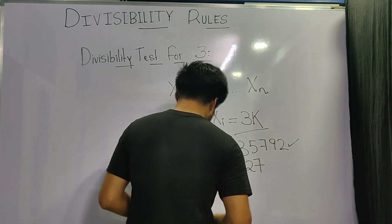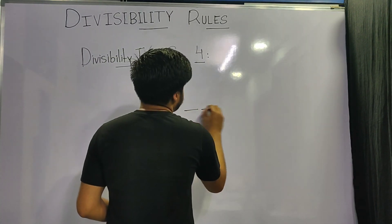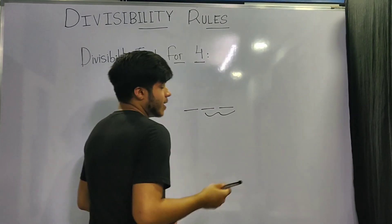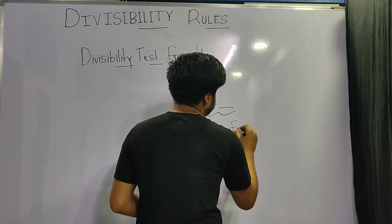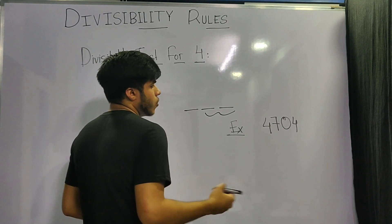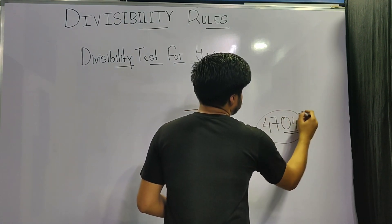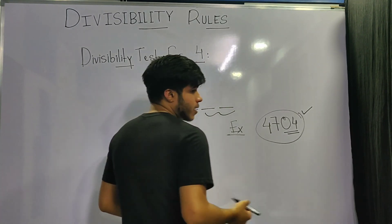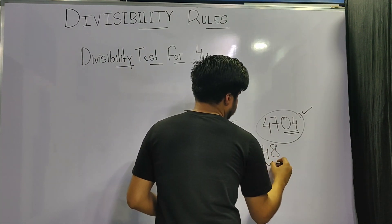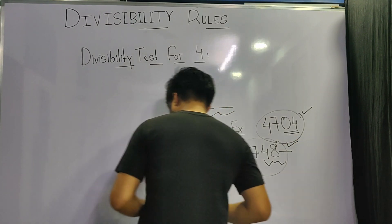Now let's check for the number 4. The rule is simple: if the last two digits of the number are divisible by 4, then the number is divisible by 4. For example, 4704 — its last two digits, 04, are divisible by 4, so the number is divisible by 4. Similarly, for 5748, the last two digits are 48, which is divisible by 4, so 5748 is also divisible by 4.